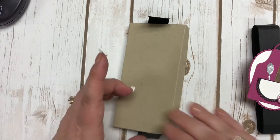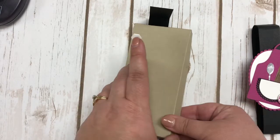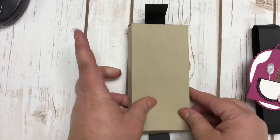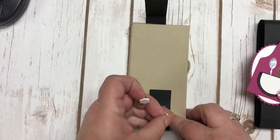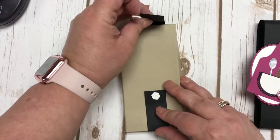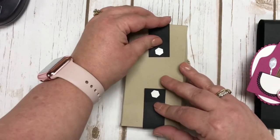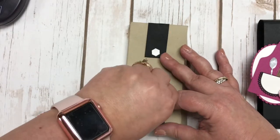What I did then is I went ahead and I added dimensionals. Let me make sure this is nice and closed. So what I did is I added dimensionals to the two ends of the belly band just like so, and you kind of want to have that straight.